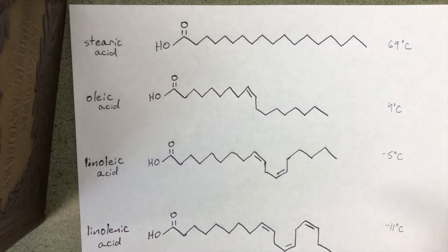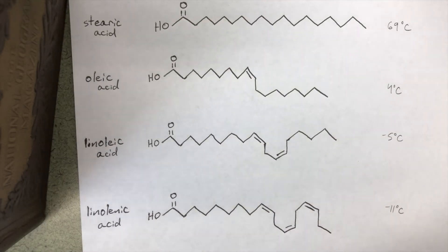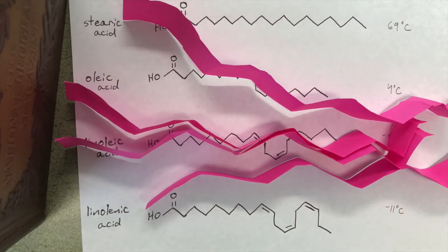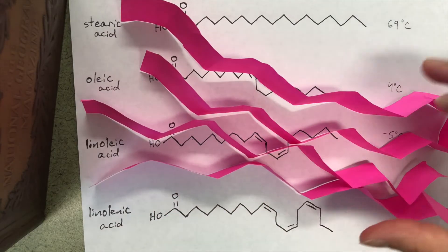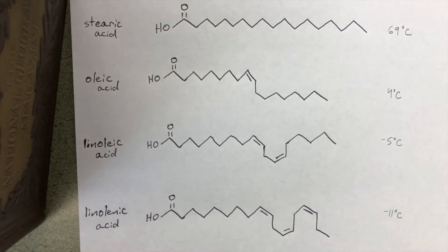If we take an unsaturated fat going down to linolenic acid, we remember that trying to pack a lot of unsaturated fats together doesn't work so much because of all these kinks. They just don't pack as well as if they were flat and straight. And so not being able to pack as well means that they don't have as much surface area contact and so there's less van der Waals forces and so the melting point is lower.